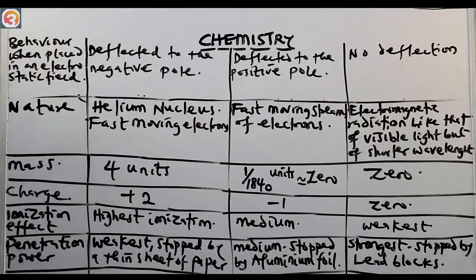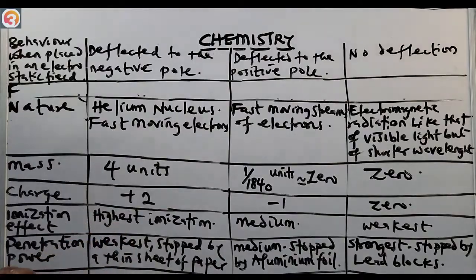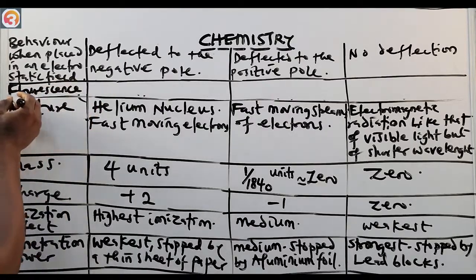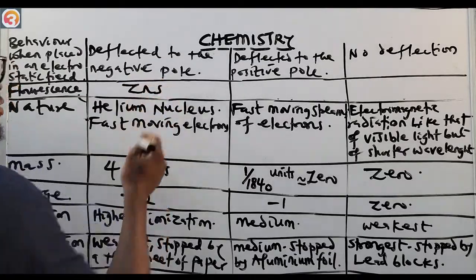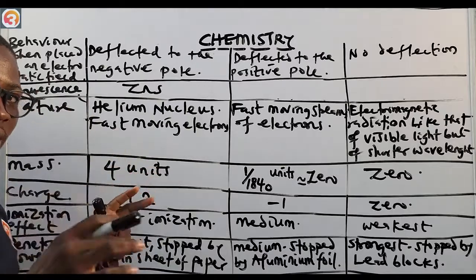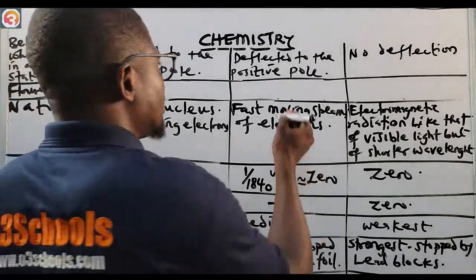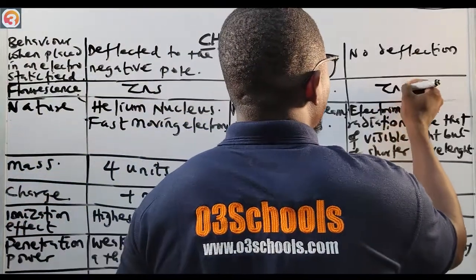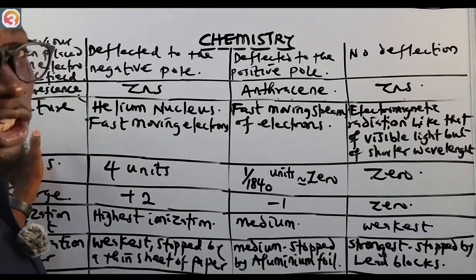Fluorescence is the ability to emit light when radiation passes through certain materials. Alpha radiation shows fluorescence with zinc sulfide (ZnS). Beta radiation shows fluorescence with anthracene. Gamma radiation shows fluorescence with zinc sulfide as well.